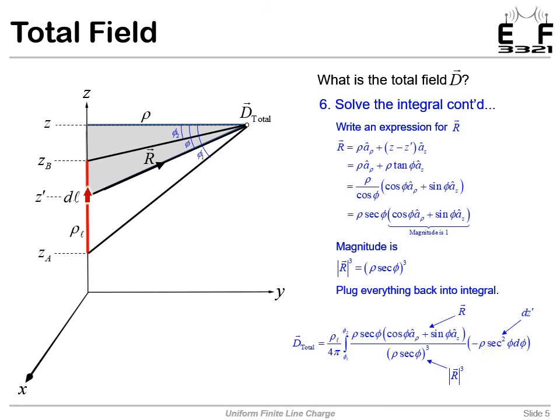So at this point, we have what we think is this big, ugly integral, all in terms of phi. So we did our job there. Doesn't look easier yet, does it?